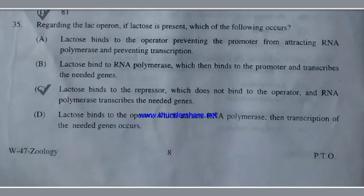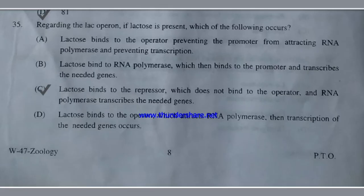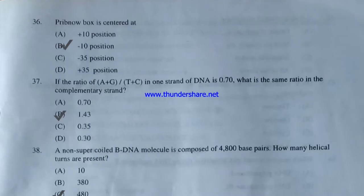Regarding the lac operon — if lactose is present, which of the following occurs? Option A: lactose binds to the operator, preventing the promoter from attracting RNA polymerase and preventing transcription. Option B: lactose binds to the repressor, which does not bind to the operator, and RNA polymerase transcribes the needed genes. Option D: lactose binds to the operon, attracting RNA polymerase, then transcription occurs. The correct answer is option C — lactose binds to the repressor, which does not bind to the operator, and RNA polymerase transcribes the needed genes.